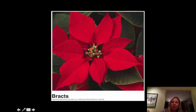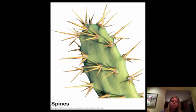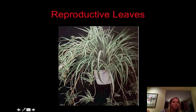These poinsettia leaves are actually leaves — the flowers are these small things right here in the middle. Usually floral leaves are a result of having a small flower, and you need to get pollinators to come. Then you can have spines, which are going to help you to keep from losing too much water, like a cactus. You can also have reproductive leaves, where the leaves grow in clusters that you can break off and it'll turn into a whole new plant — like a spider plant.